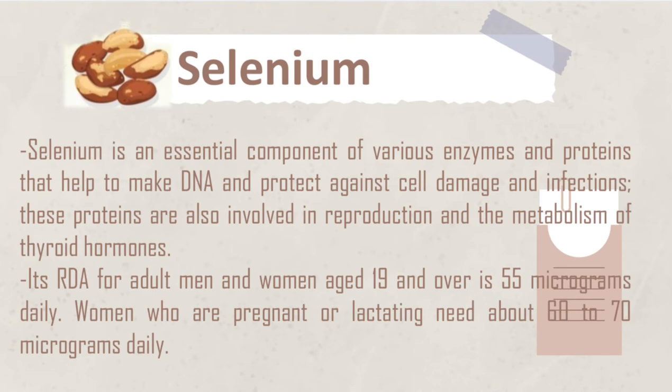Lastly, we have selenium. Selenium is an essential component of various enzymes and proteins that help to make DNA and protect against cell damage and infections. These proteins are also involved in reproduction and the metabolism of thyroid hormones. Its RDA for adult men and women aged 19 and over is 55 micrograms daily. Women who are pregnant or lactating need about 60 to 70 micrograms daily.